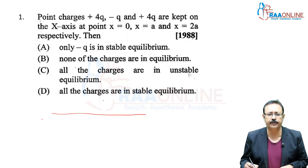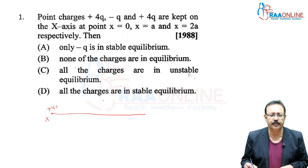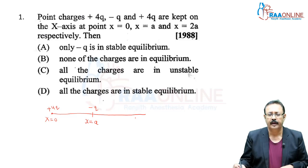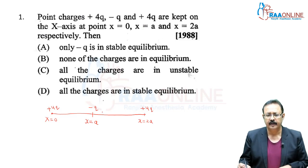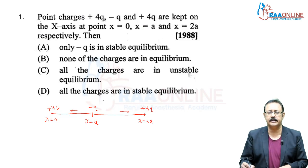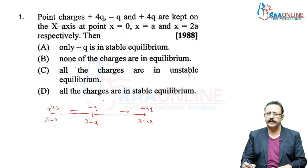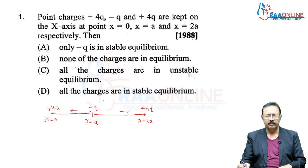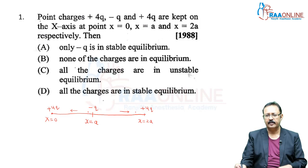We place +4Q at x=0, -Q at x=A, and +4Q at x=2A. The two +4Q charges attract the -Q charge from both sides. Both forces are equal, so they cancel each other, meaning -Q is in equilibrium. But if -Q is pushed slightly toward one charge, that force increases while the other decreases, and the balance is destroyed.